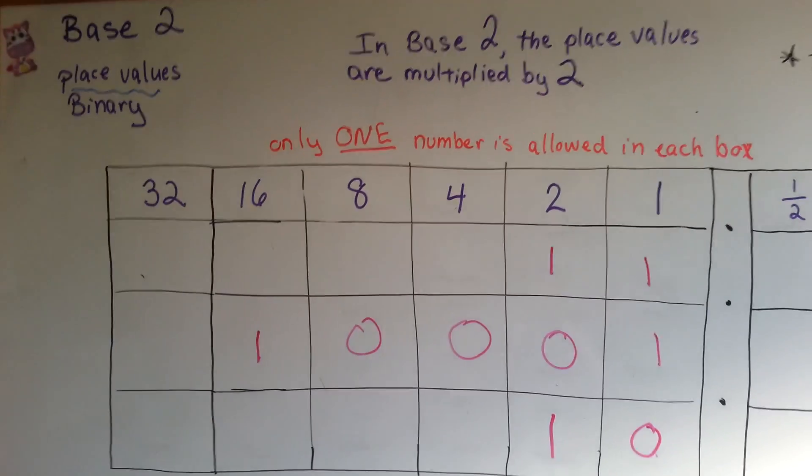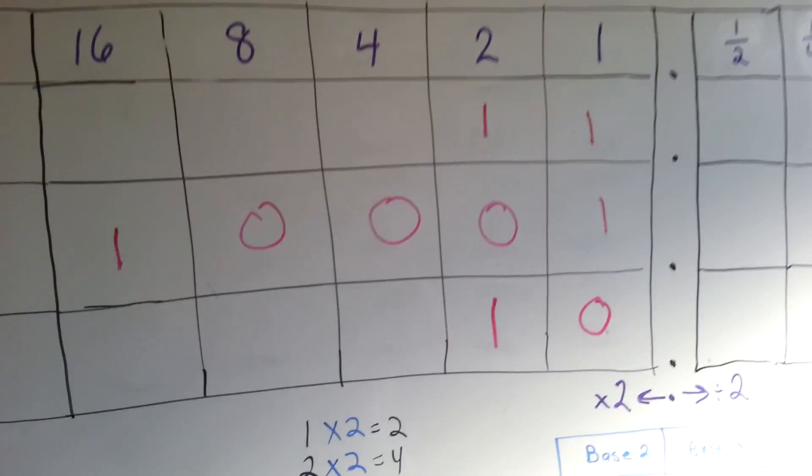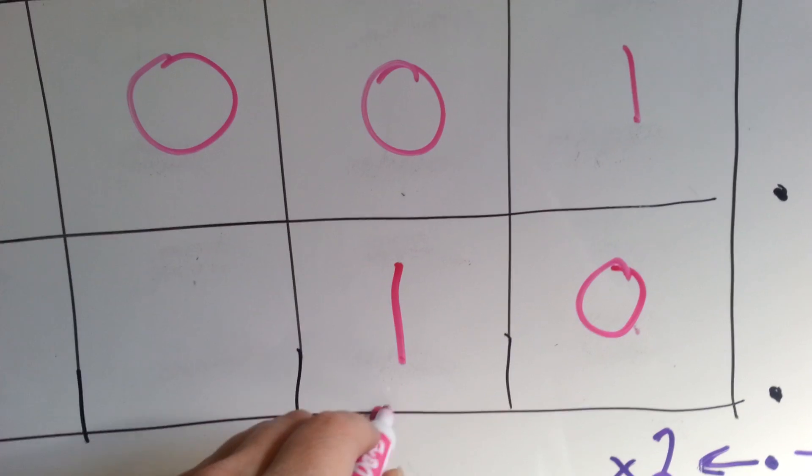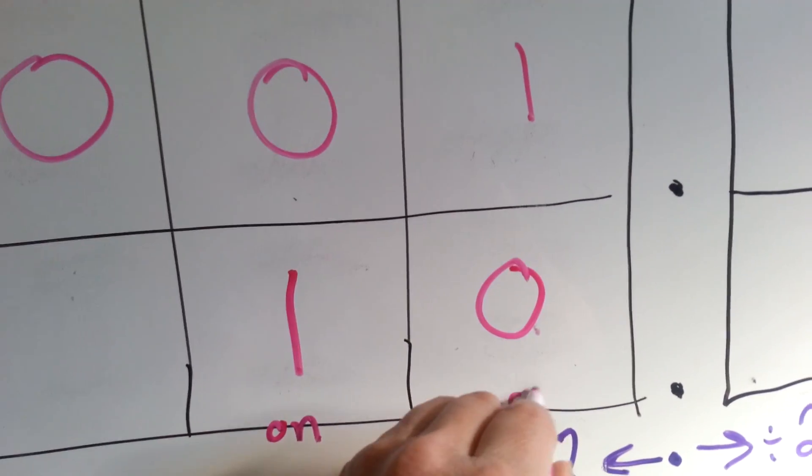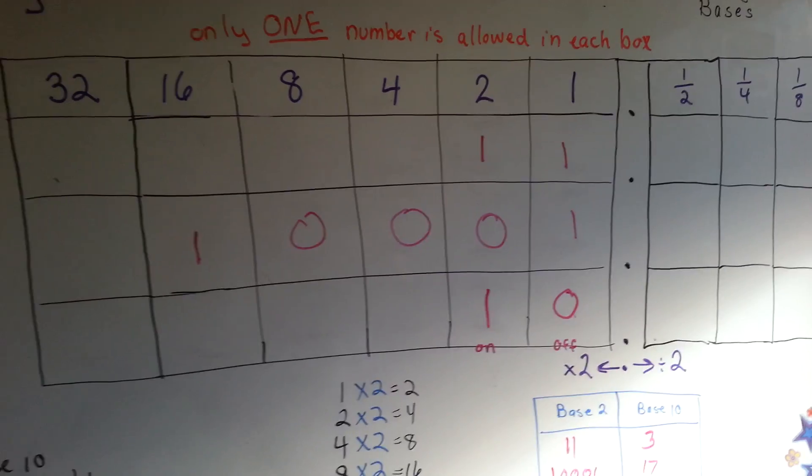Now, with computers, in binary code, 1 means on, and 0 means off. And the computer is full of 1s and 0s telling it what to do.